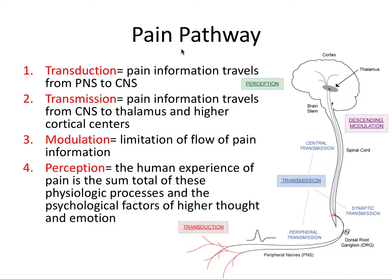The pain pathway generally consists of four major steps. First, we start with transduction, where the pain information travels from the peripheral nervous system to the central nervous system. Then we have transmission, where pain information travels from the central nervous system here in the spinal cord up into the thalamus and the higher cortical centers. Thirdly, we also have modulation —